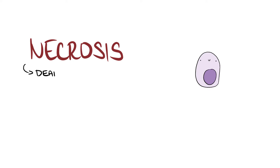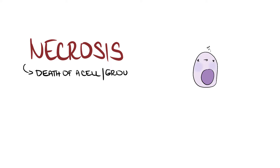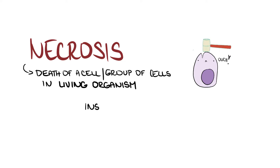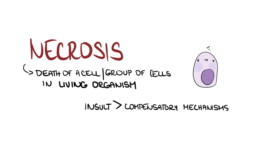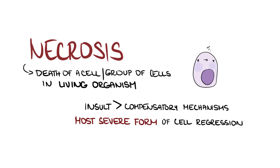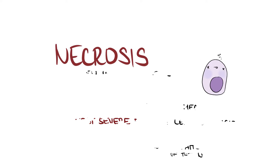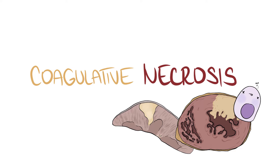Necrosis refers to a death of a cell or group of cells in a living organism. It develops in a situation in which an insult exceeds the compensatory mechanisms of the damaged cell and represents the most severe form of cell regression. There are several morphologically distinct patterns of necrosis. In this video, we'll discuss coagulative necrosis.